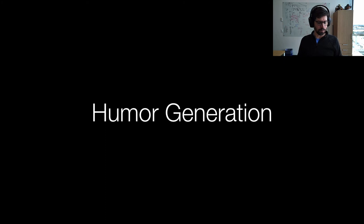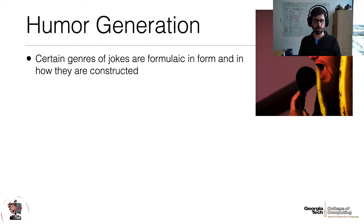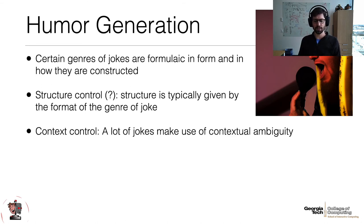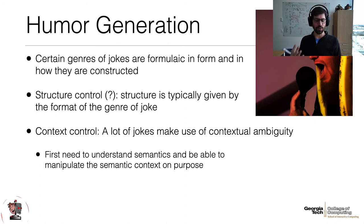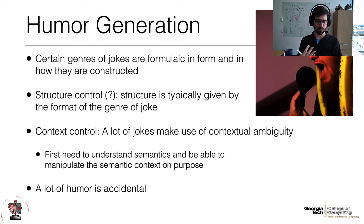That brings us to humor generation — arguably the hardest text generation technique we're talking about. The good news is certain types of jokes, like knock-knock jokes, are very formulaic in how they're constructed, so we don't have to worry too much about structure; we can hard-code that in. But what makes humor hard is the context. Jokes use contextual or semantic ambiguity, but to get contextual ambiguity you actually have to understand semantics in a deep and meaningful way — manipulating context to make your user think one thing, then delivering a punchline that means something else. A lot of humor in neural networks is accidental: not intended, arising from a mistake or error. The challenge is producing reproducible, intentional humorous outputs.